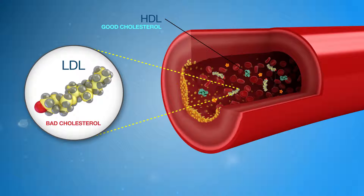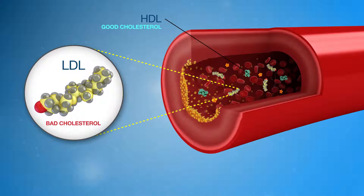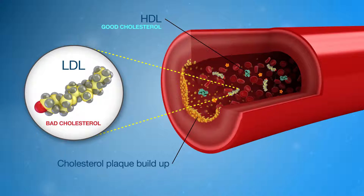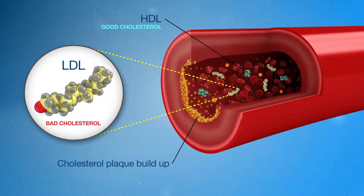You may see different types of cholesterol on your blood test results. LDL cholesterol, also known as the bad cholesterol, can cause plaque build-up in the walls of the blood vessels. HDL cholesterol, also known as the good cholesterol, can remove excess cholesterol from the walls of the blood vessels and take it back to the liver for disposal.